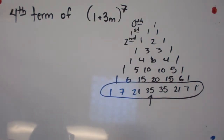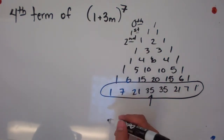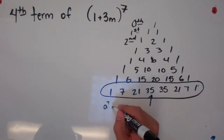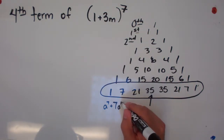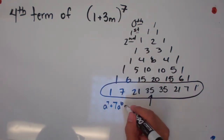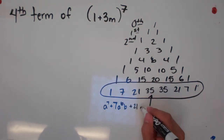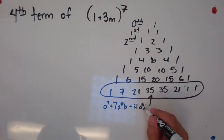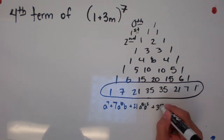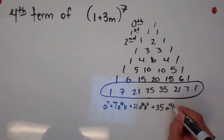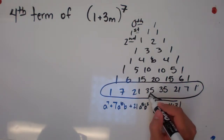Let's write out the expansion. We always start with our a term: a to the seventh, plus seven a to the sixth b, plus 21 a to the fifth b squared, plus 35 a to the fourth b to the third — and the sum of exponents is still seven. That fourth term — 35 a to the fourth b to the third — is actually the term we wanted to find.